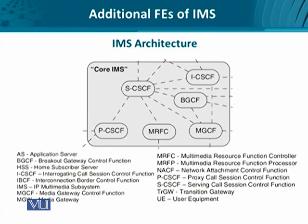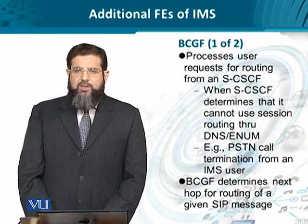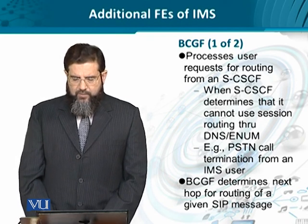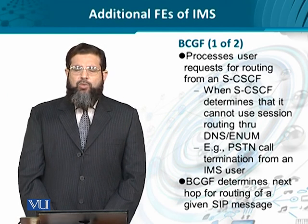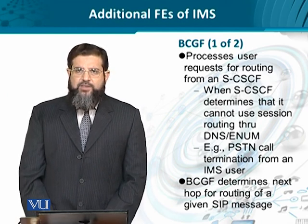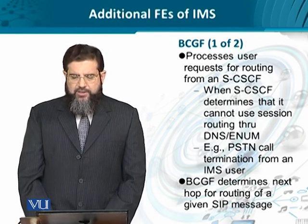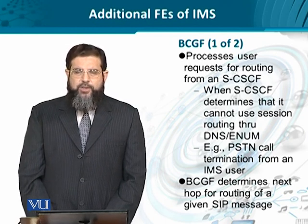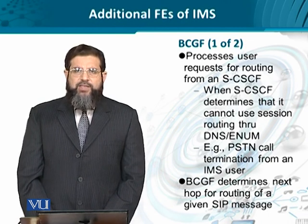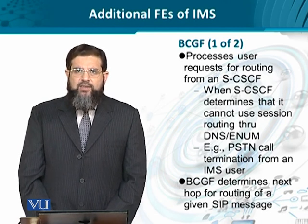Let's look at their functionality one by one. The Breakout Gateway Control Function is responsible for an exception — it is a node that processes user requests which come for routing from the Serving CSCF when the Serving CSCF realizes that it cannot provide translation.